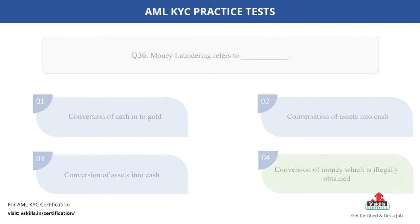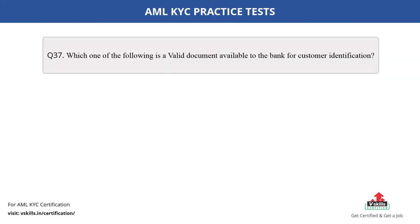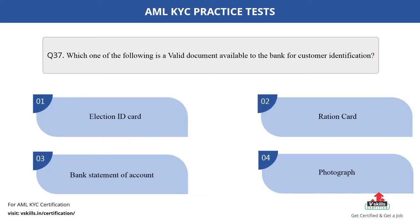Question number 37. Which one of the following is a valid document available to the bank for customer identification? The options are: A. Election ID card; B. Ration card; C. Bank statement of account; D. Photograph. The correct answer is option A.